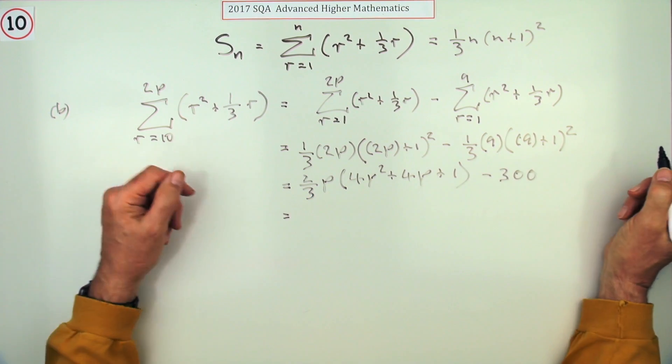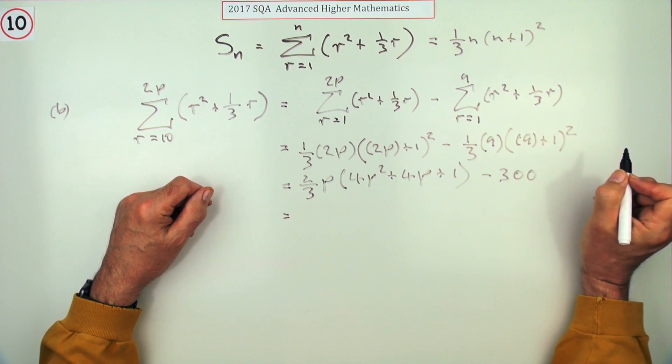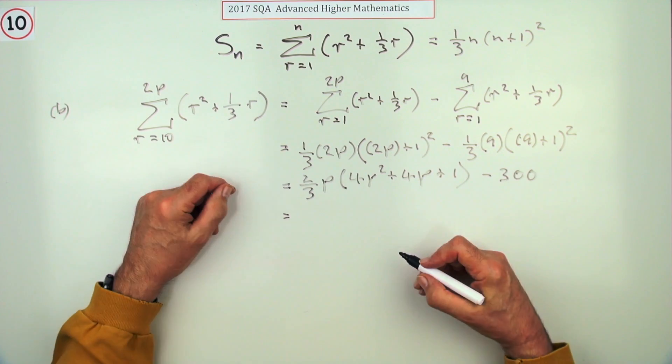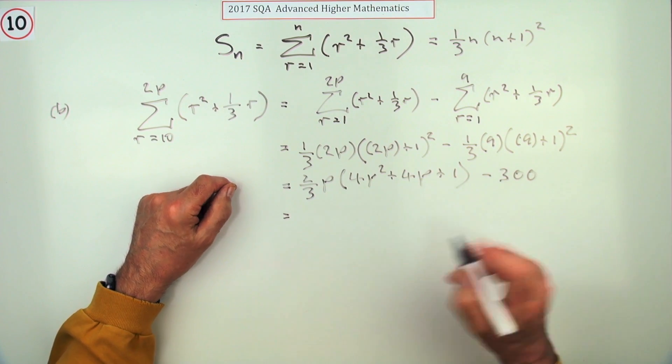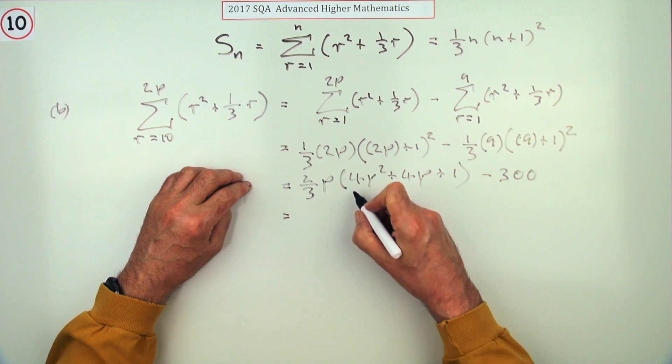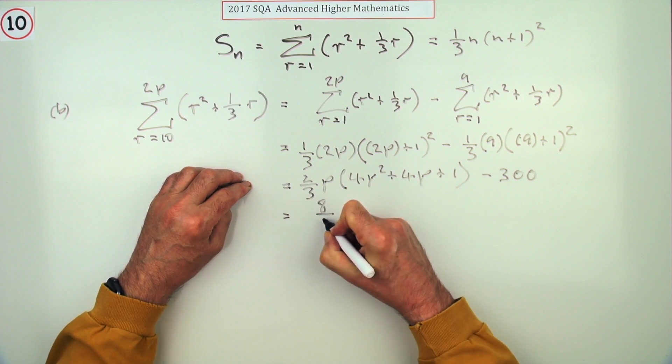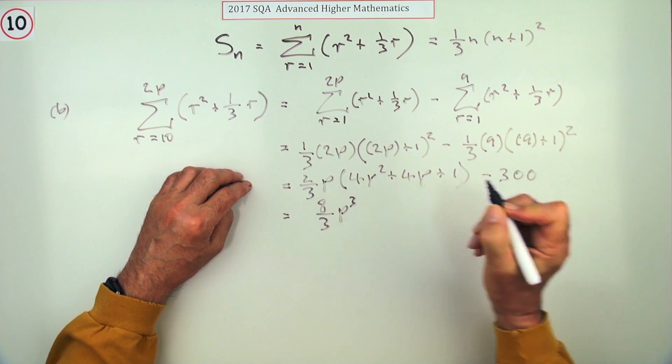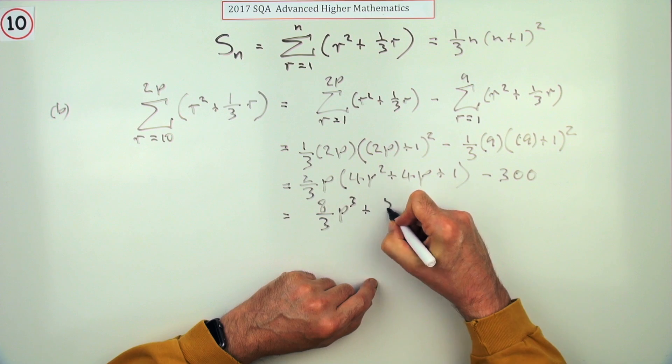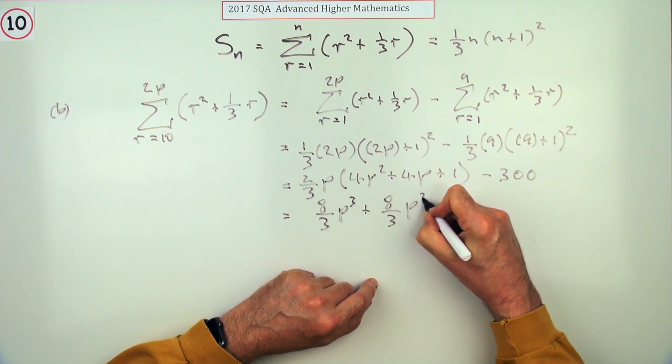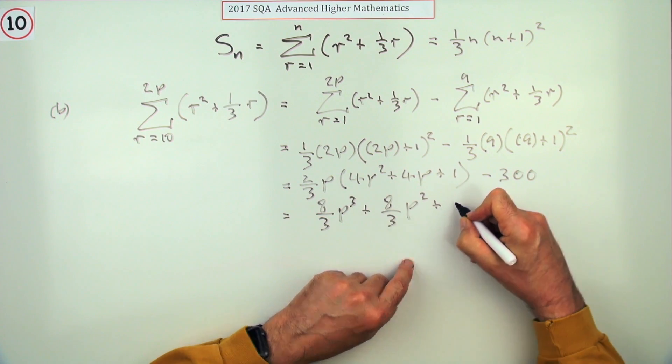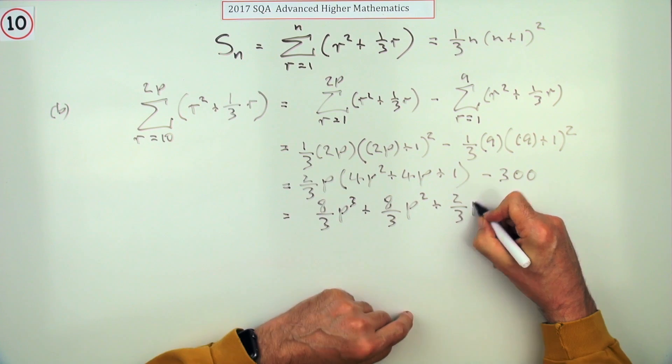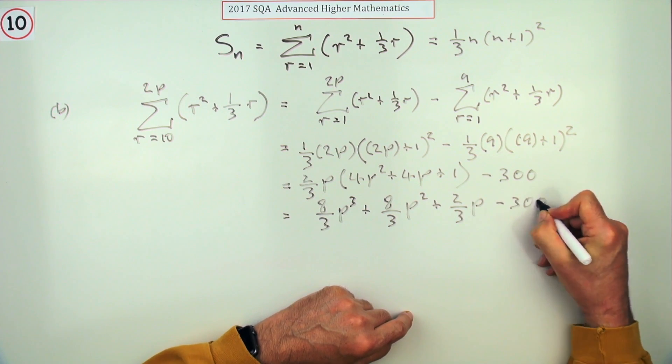Now it's just a case of what can I do with that. Just multiply it out and write down the four bits. One mark, so that means I've got eight upon three p cubed, and I've got eight upon three p squared, but only two thirds of p, and minus 300.